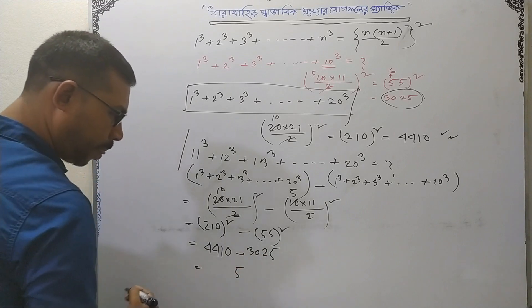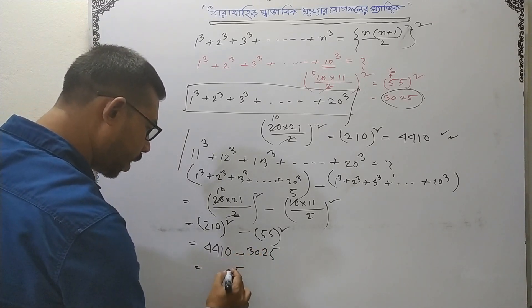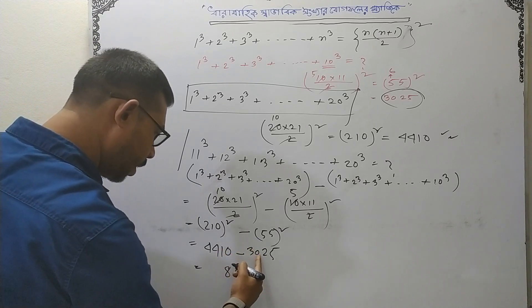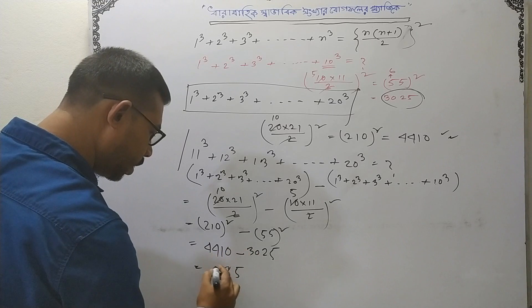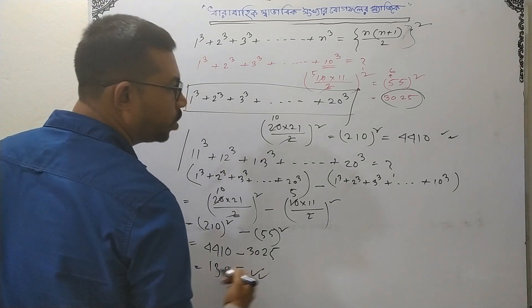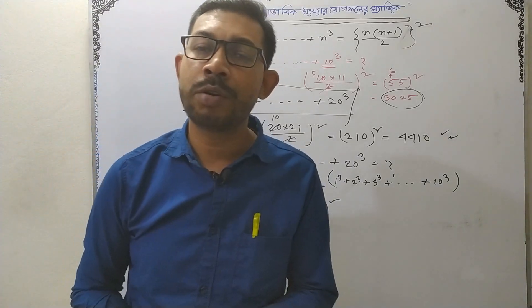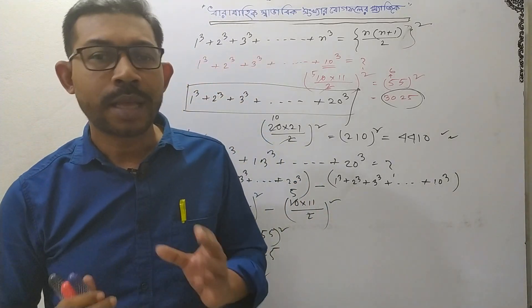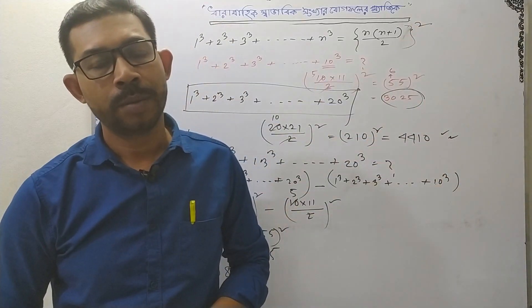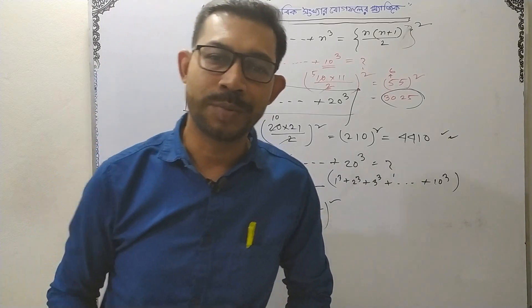So we have 5 square. 5, 3, 8, 1, 3, 3, 3, 3, 4, 3, 4. So we have 5 square. So we have 5 square. So we have 5 square. Assalamualaikum.